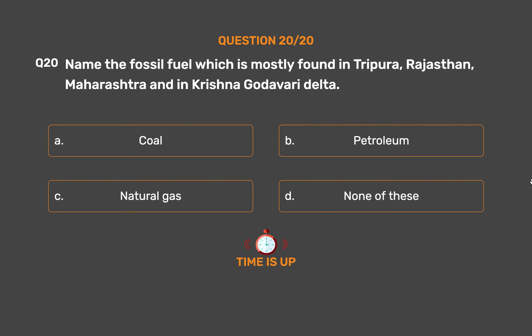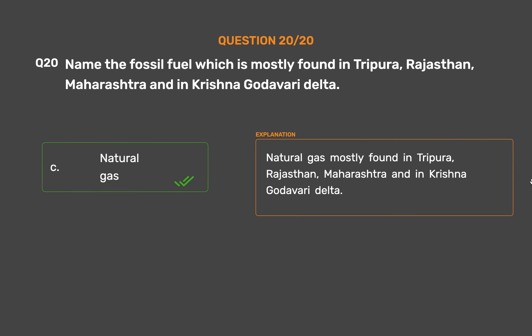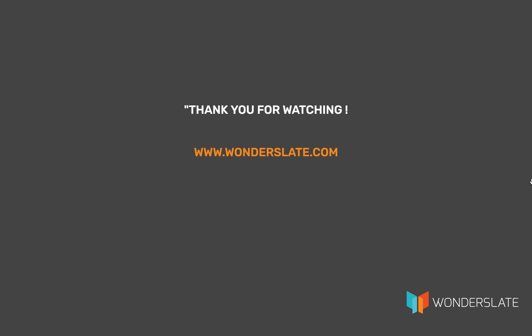The correct answer is Option C: Natural gas. Natural gas is mostly found in Tripura, Rajasthan, Maharashtra, and in the Krishna Godavari Delta. Thank you for watching the video.